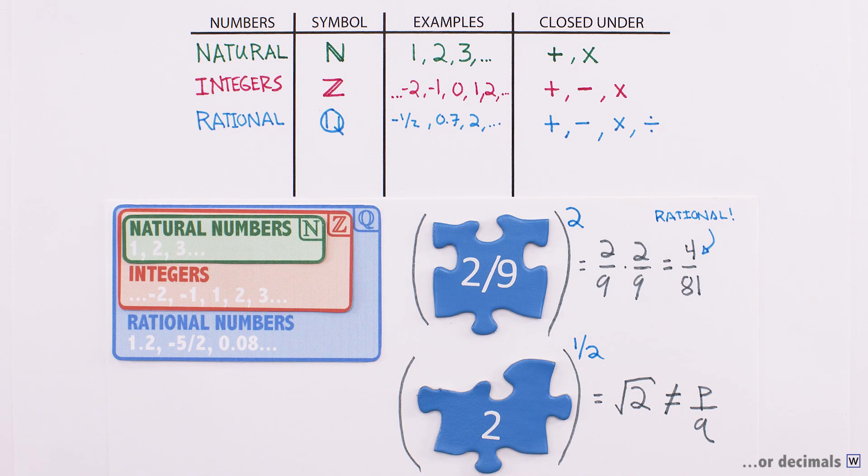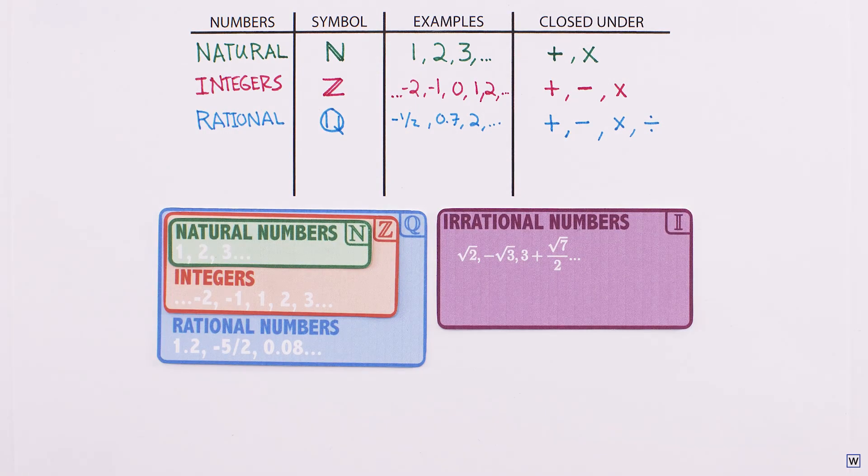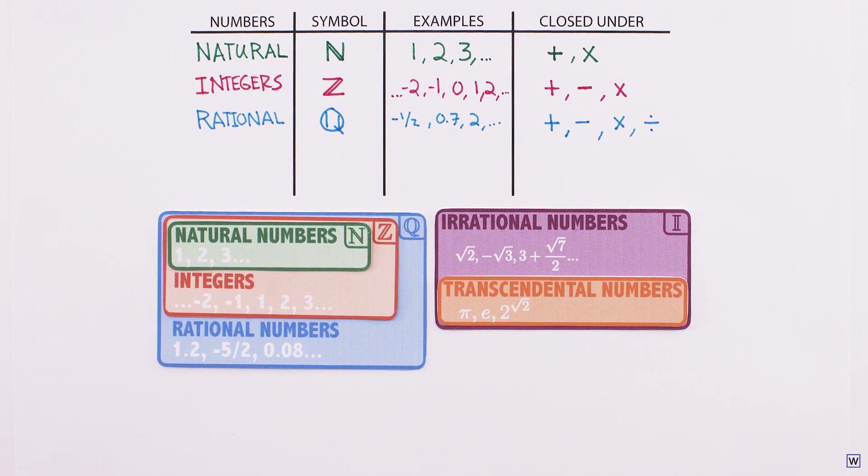There are no two integers that, when divided, equal exactly the square root of 2. Since numbers like this are not rational, we give them the name irrational. There's one more class of numbers that are even cooler than irrationals, the transcendental numbers like pi and e. We'll also save these for another day.